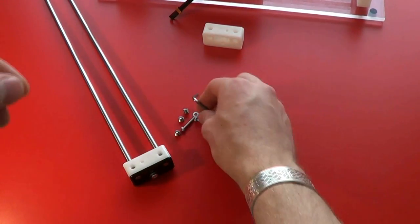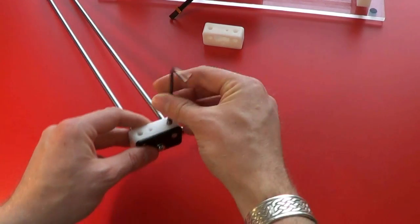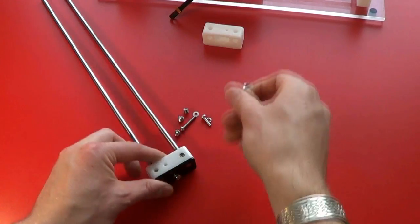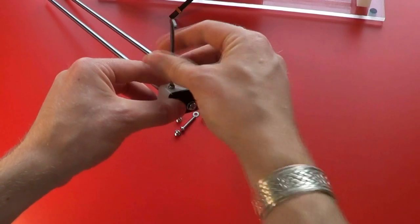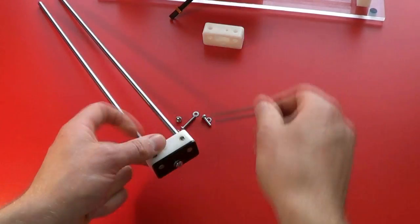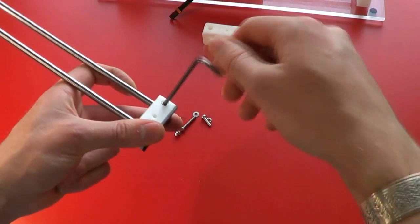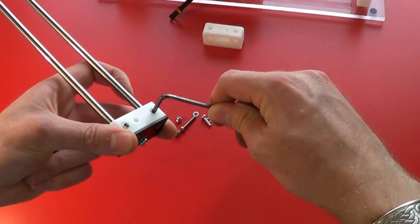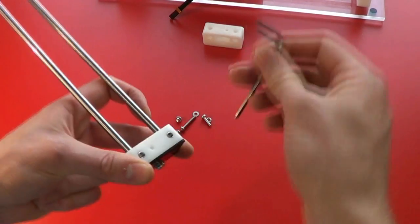Take two of the large grub screws, screw them into the support block, and tighten them up. This clamps the wire rails into the support block. When tightening them, use the short handle of the allen key, not the long handle, because you can apply too much torque and risk stripping the threads.